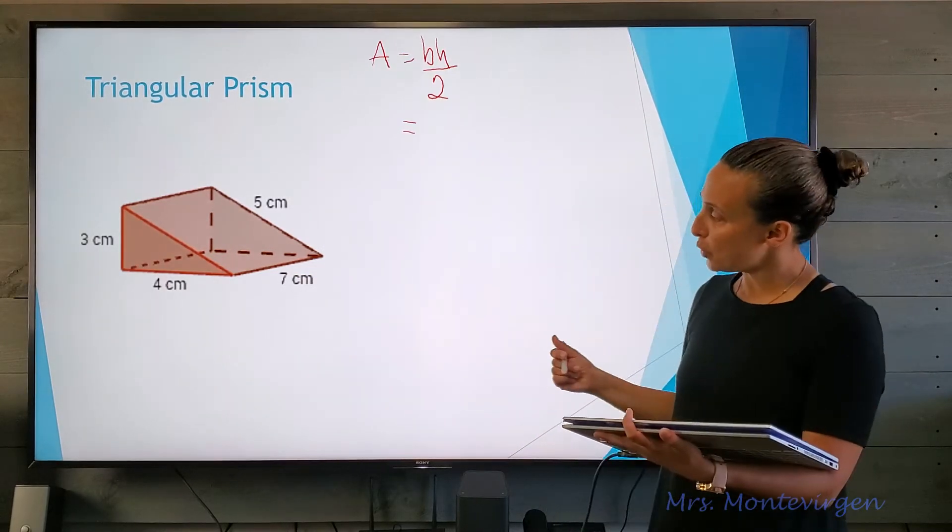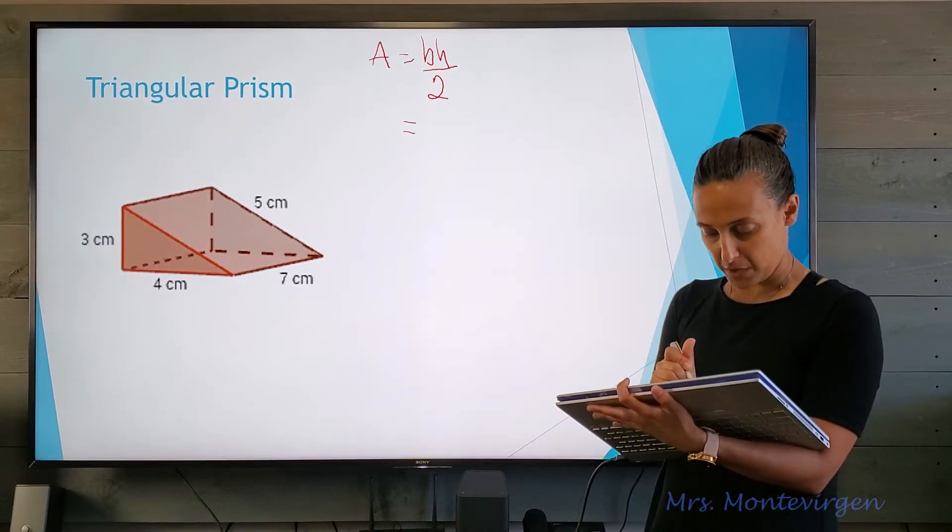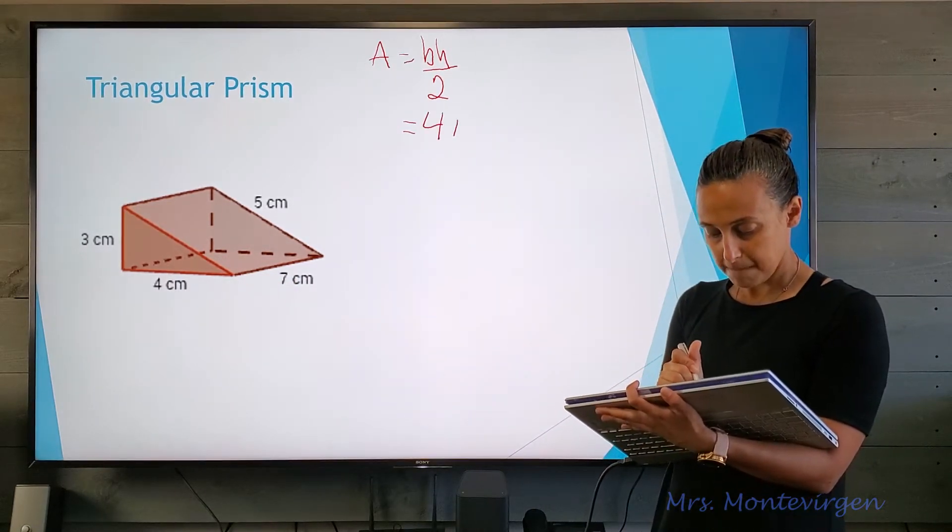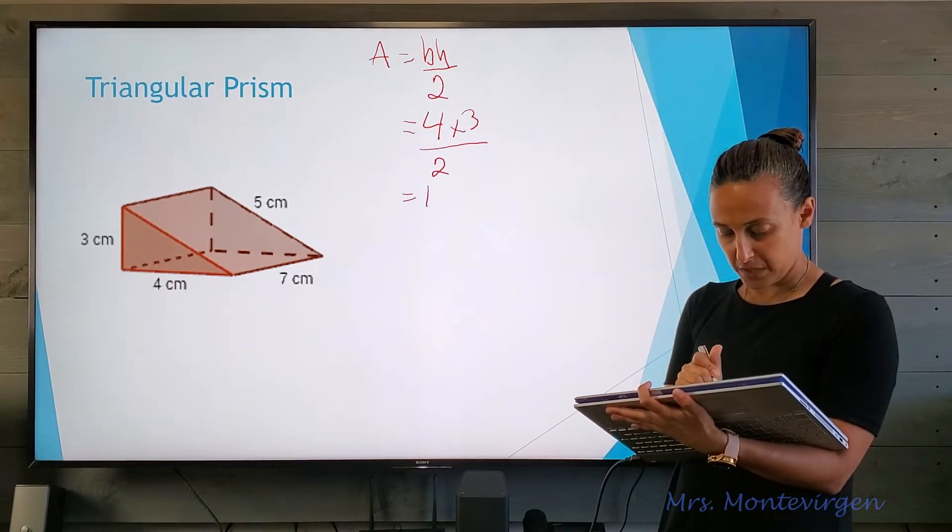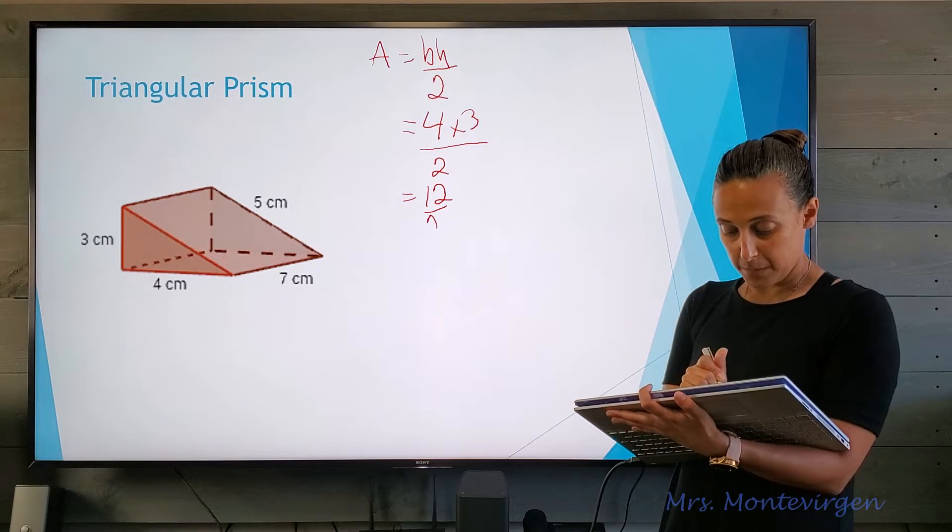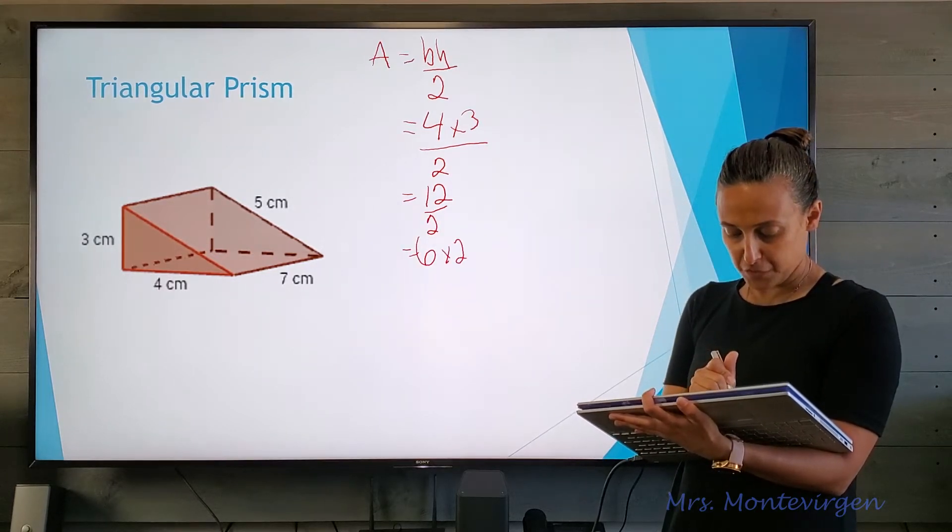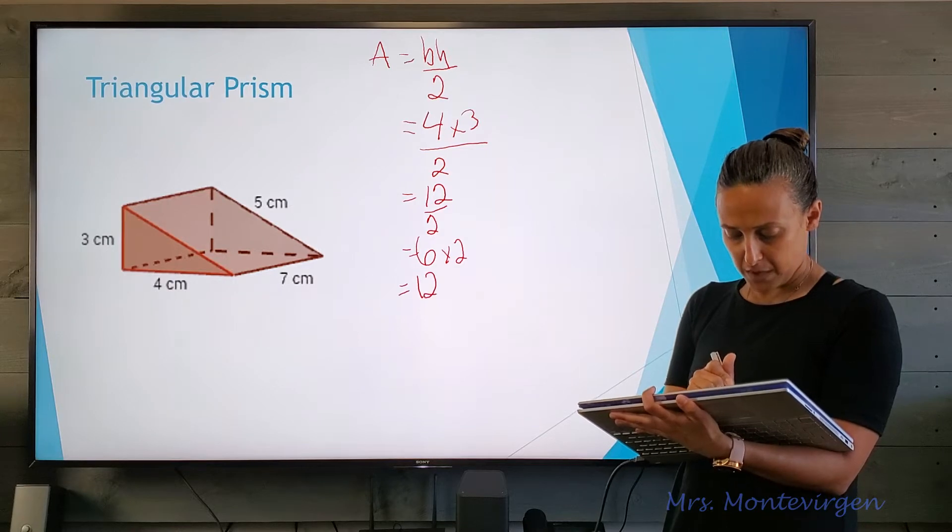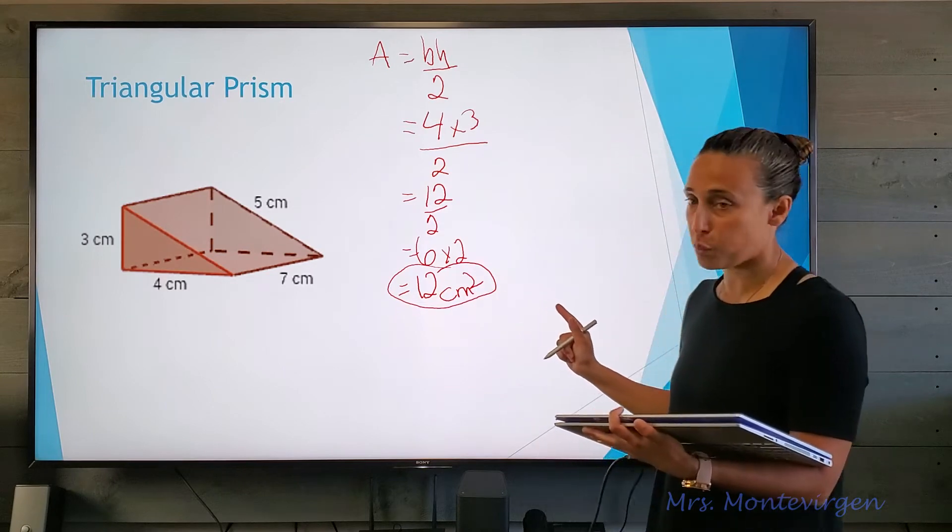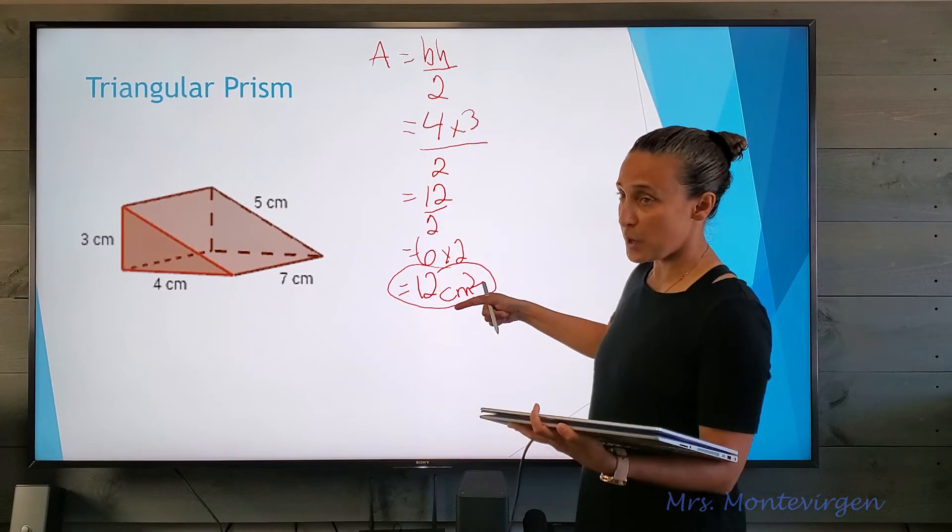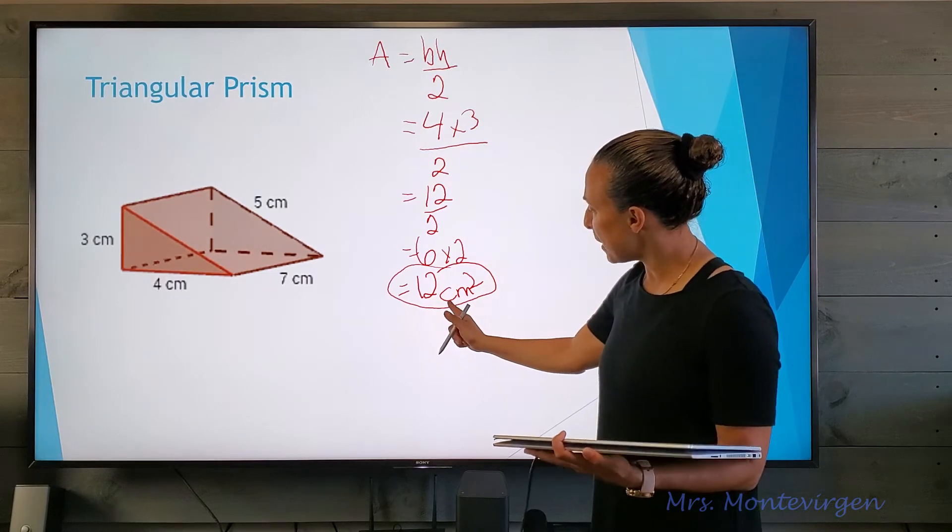I see my dimensions here are four times three. Four times three is twelve, divide that by two I have six. We have two faces here, so I have twelve square centimeters, and I'm going to circle my solution right here.